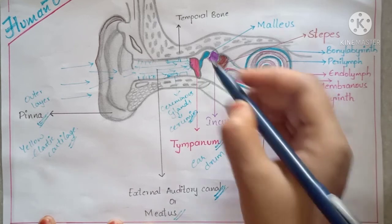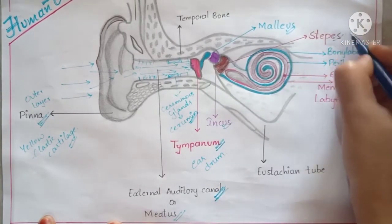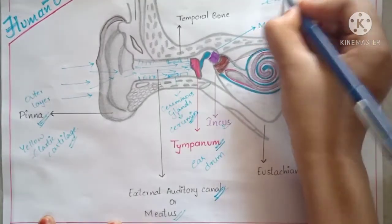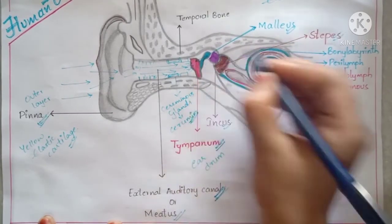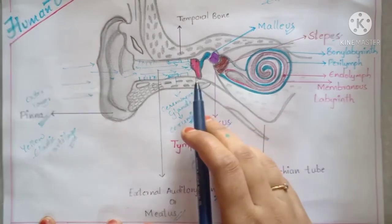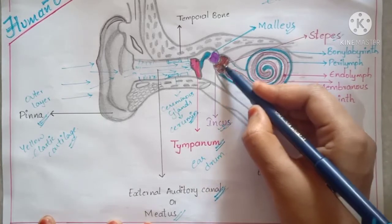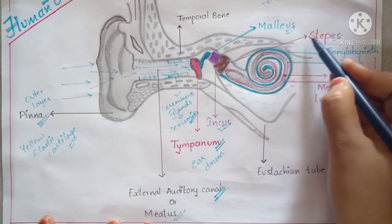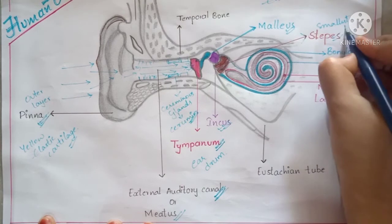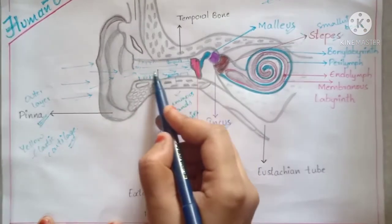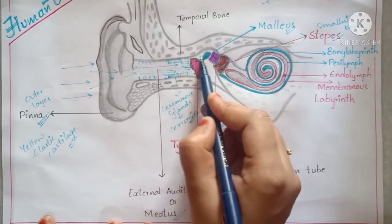Now let's look at the middle ear. The main parts of the middle ear are the malleus, incus, and stapes, which are also known as the ear ossicles. The malleus is attached to the tympanum. The incus, shown in violet color, is attached to the malleus. The last one, shown in brown color, is the stapes — the smallest bone in our body.